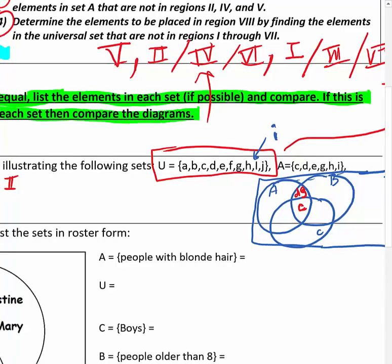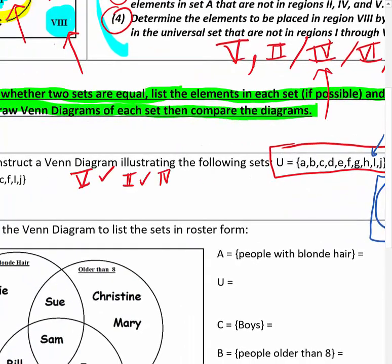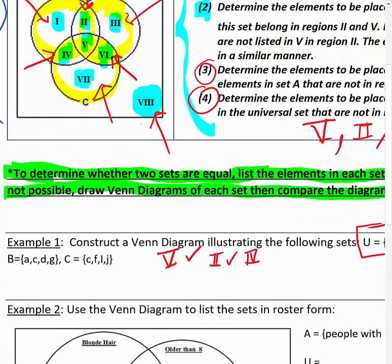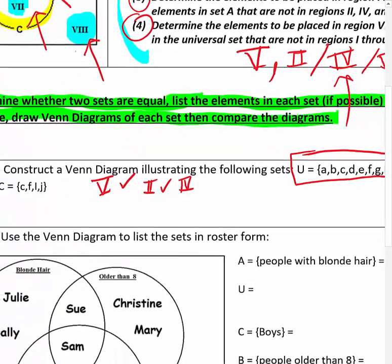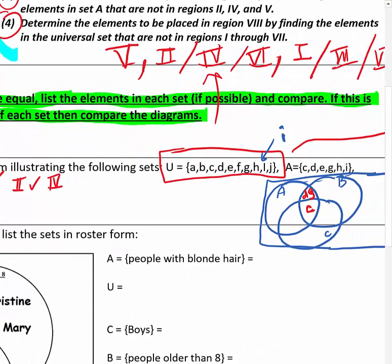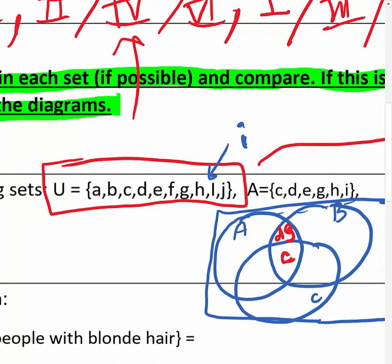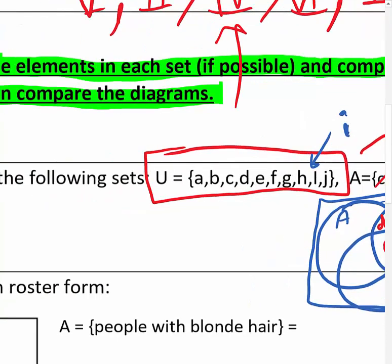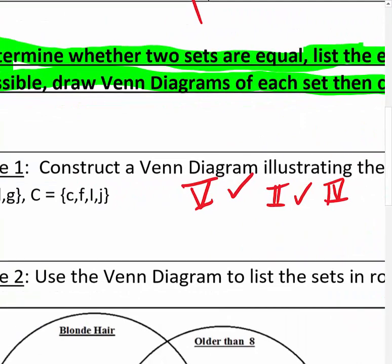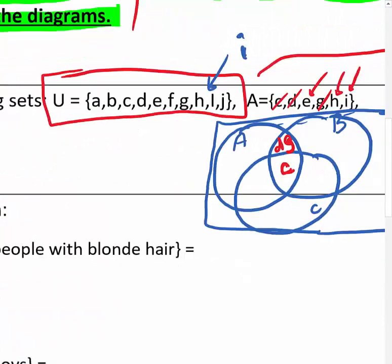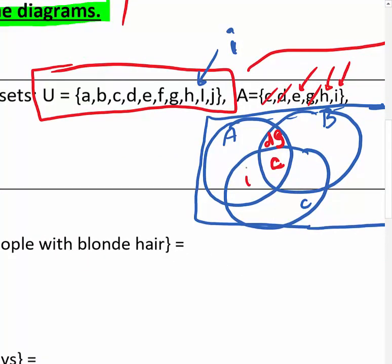Next is area four — the area shared by sets A and C. Looking at A and C, besides the letter C already placed, what's left in A? E, H, and I. Are any of those in set C? I is in there. So sets A and C have I in common — I goes in region four.